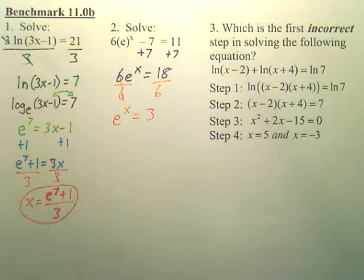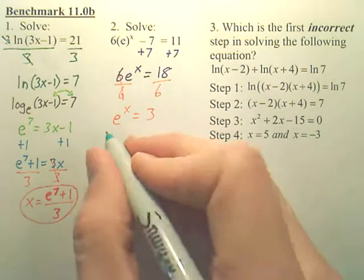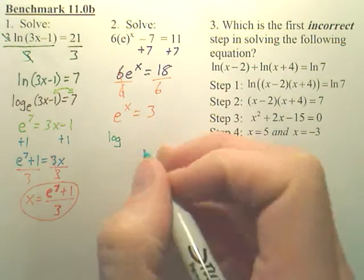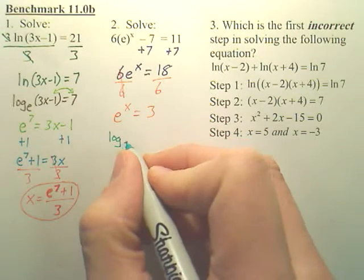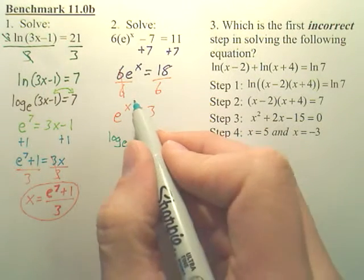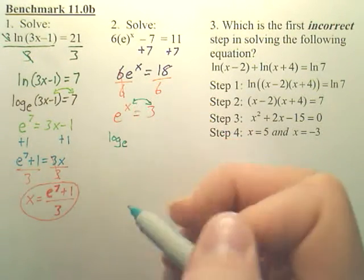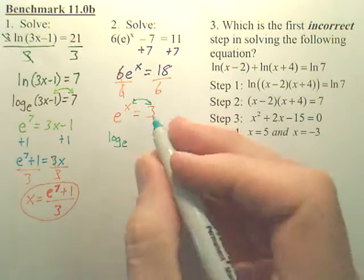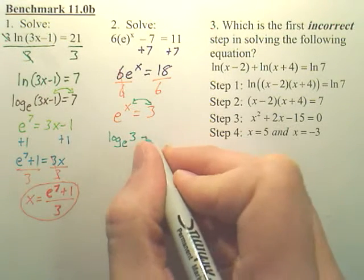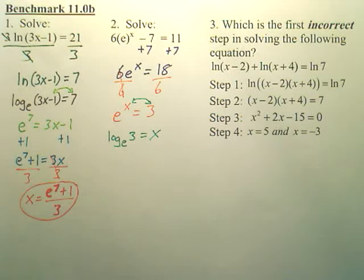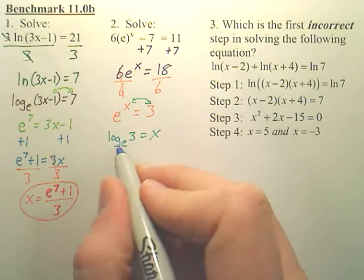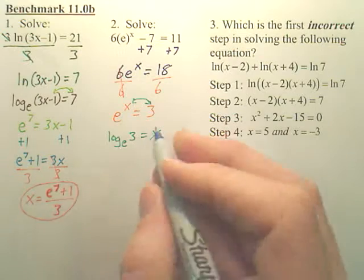And how do we get rid of, how do you get the x out of the exponent? You make it into a log. So you write the word log. When you write log in front, the e becomes the base of the log, and we switch these two. When you switch those two, you get a 3 here, and you get x here. Now, don't leave your answer like that. What's log base e? It's ln.